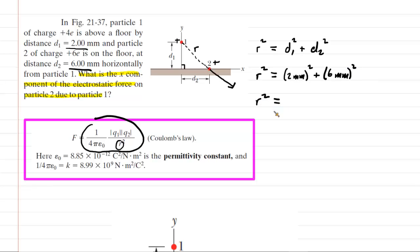And then d2 is 6 millimeters. So cleaning up the right-hand side, we're going to have 2 squared plus 6 squared, which is going to turn out to be 40. This will be millimeters squared. And then if you take the square root of both sides, we see that r is equal to the square root of 40 millimeters.